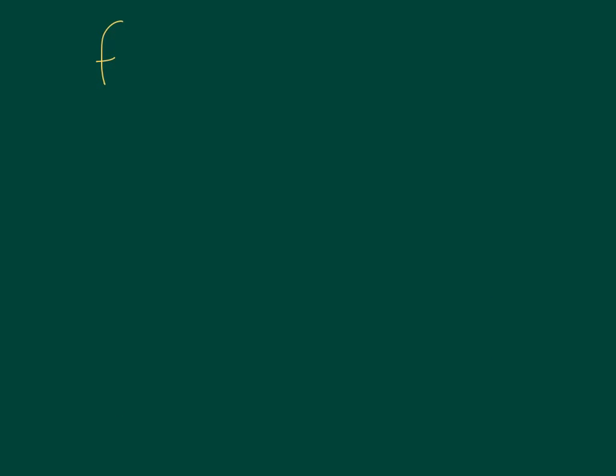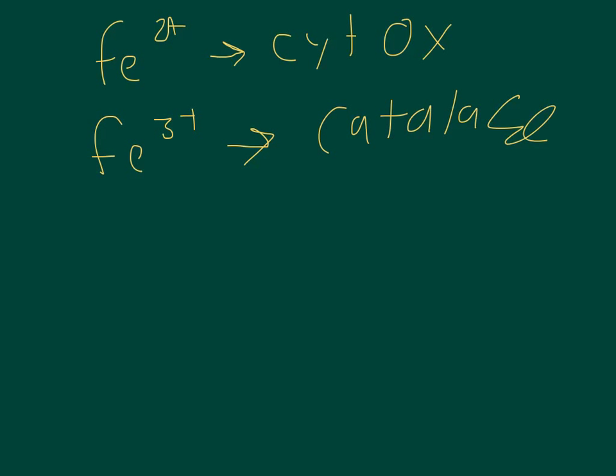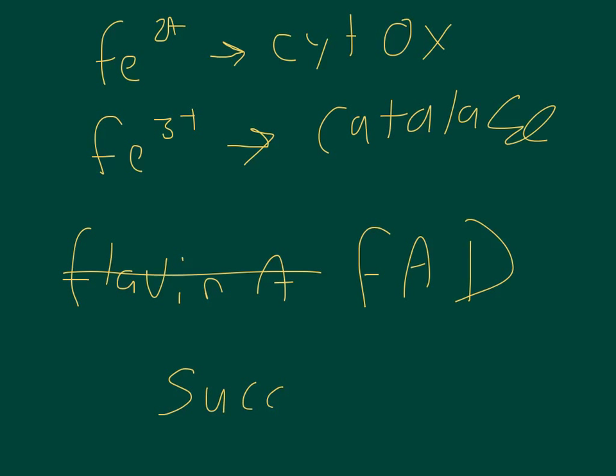And just an example of some cofactors. There's iron 2+, which is required by cytochrome oxidase. Iron 3+ is required by catalase. And then an example of a coenzyme would be like flavin adenine dinucleotide, FAD, and it's used by the succinate dehydrogenase enzyme.